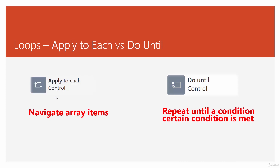Basically, when you give it a collection, it doesn't discriminate — it literally navigates through every single item in an array, in a list, or anything that has more than one item inside it. In Power Automate, they are all arrays. Remember that square bracket? When we talk about do until, this one does not have an end — it keeps on repeating a certain number of actions until a certain condition is met.